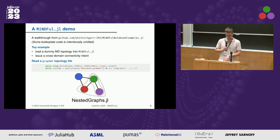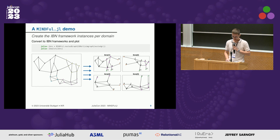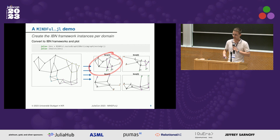This nested graph will be translated into Mindful.jl, and we plot it here on the left. This is the whole multi-domain network, composed of several subgraphs, where each one corresponds to a specific domain, as you see here on the right. Every domain has an IBN framework instance that needs to talk to the neighboring IBN framework instance in order to have interoperability.